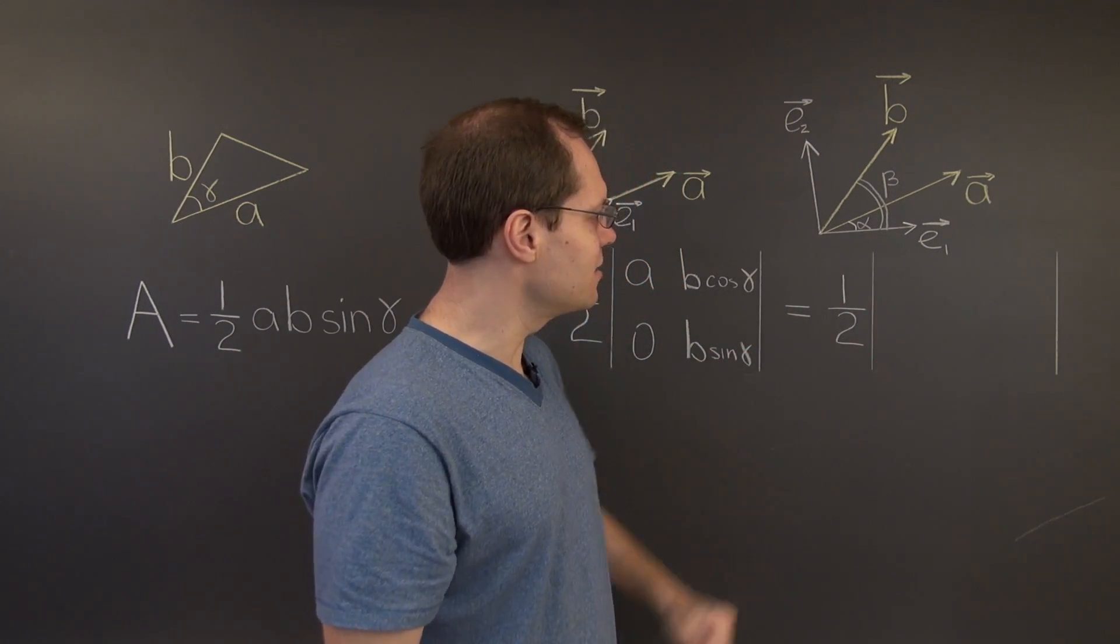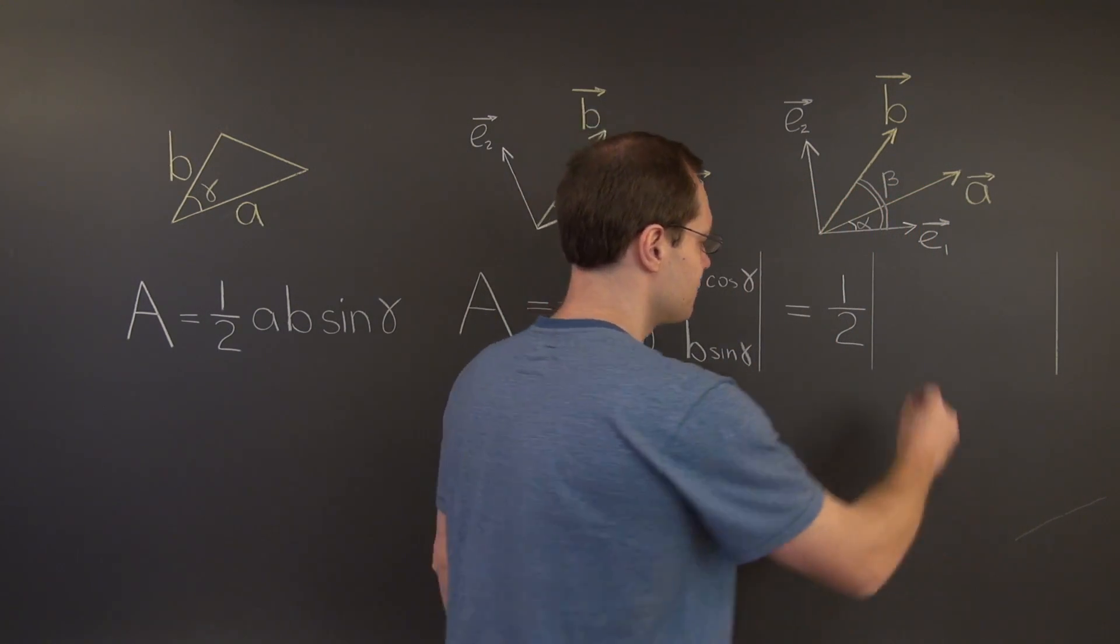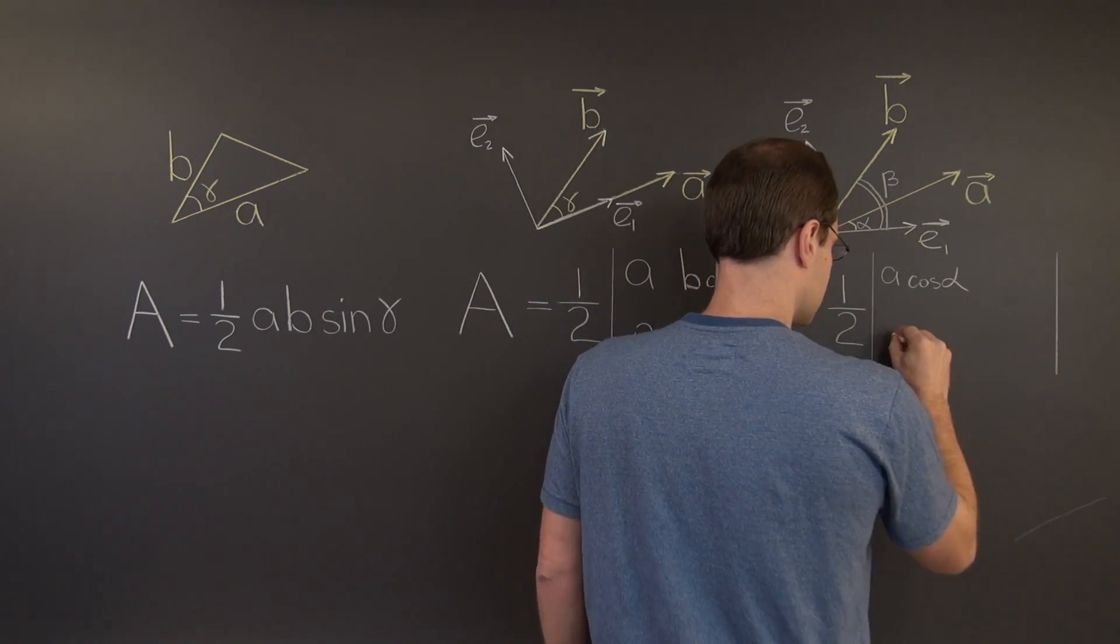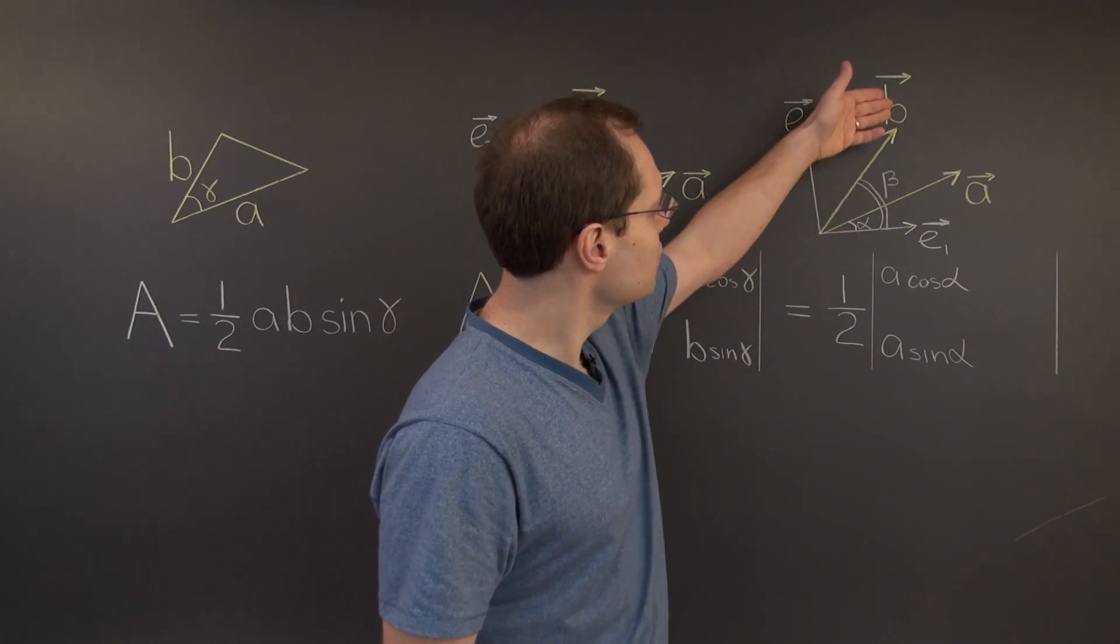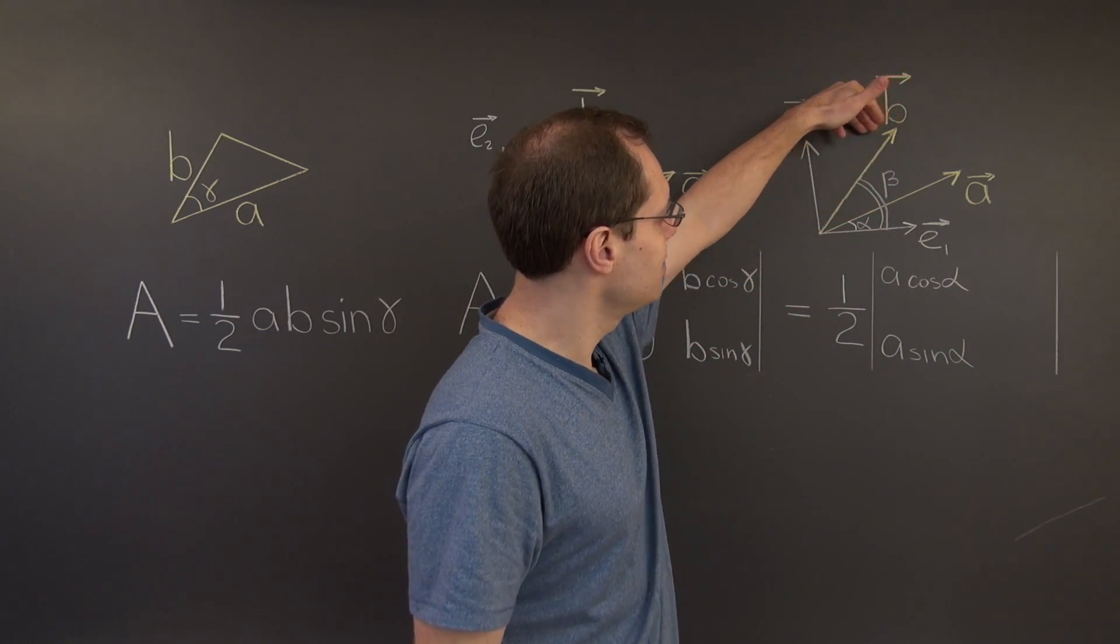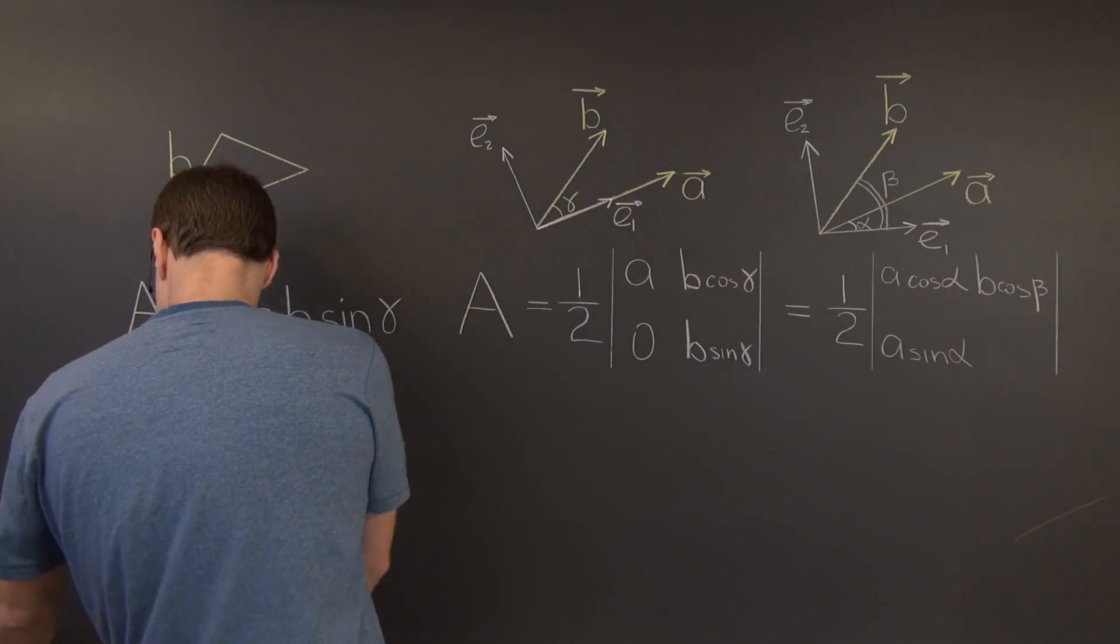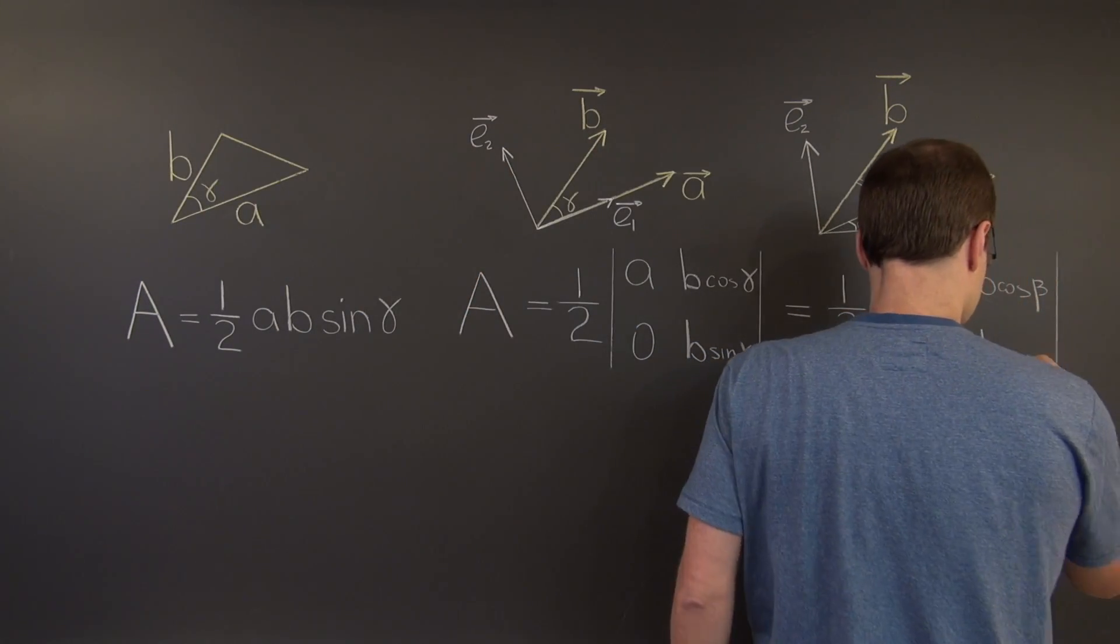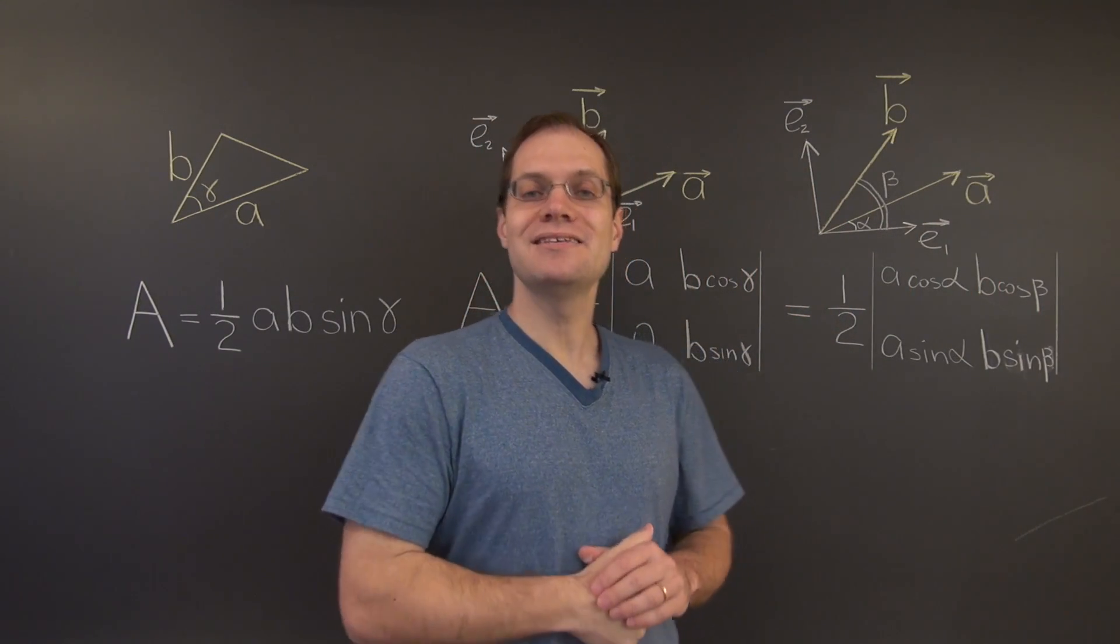And it is a little bit more general. For the first column, we of course get A cosine alpha and A sine alpha. And for the second column, the components of the vector B, we get B cosine beta and B sine beta.